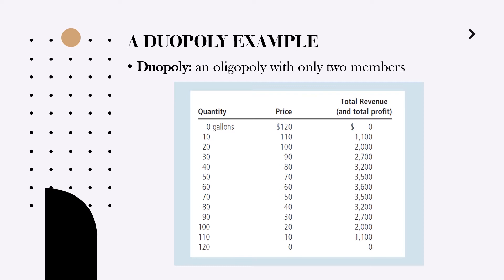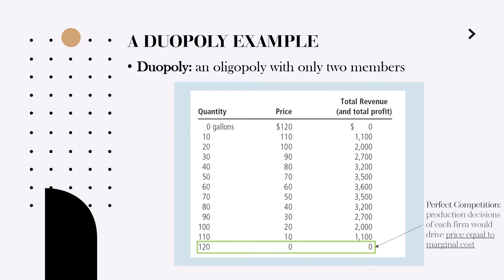Let's say we have a market — a market of water. We have a demand schedule with prices and quantity of water measured in gallons and relative revenue of the companies. Let us firstly understand what will happen in case of perfect competition.